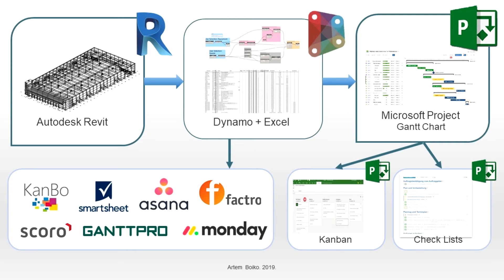The obtained data can also be exported into other process management software — Microsoft Project or other planning tools such as Scoro, Asana, Smartsheet, Monday.com, Hive, Ganpro, or others. In these programs we can also present the data in the form of Gantt charts, Kanban boards, or checklists.